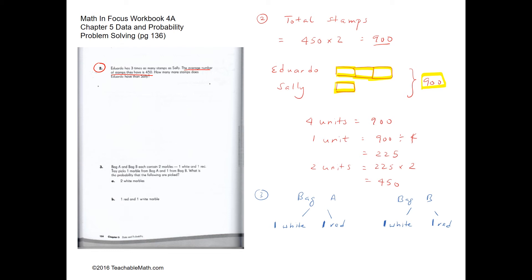Together they have four units equaling 900, so one unit equals 900 divided by 4, which is 225. Eduardo has three units and Sally has one unit, so Eduardo has two more units than Sally. Two units equals 225 times 2, which is 450. So Eduardo has 450 more stems than Sally.